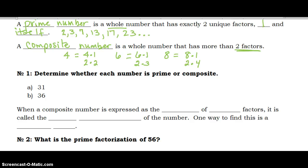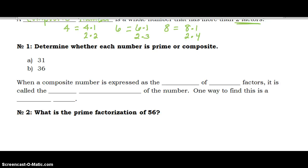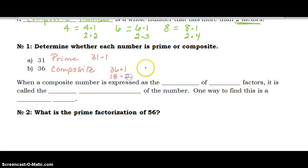Let's determine whether these are composite or prime — pause the video and try it yourself, then check your answer with mine. I hope you figured out that 31 is prime because it's just 31 times one, and 36 is composite. It has many multiples: besides 36 times 1, we have 18 times 2, 12 times 3, 9 times 4, and of course 6 times 6. So there are many factors of 36.